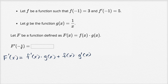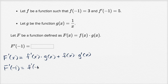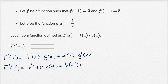And so if we want to evaluate this at negative one, capital F prime at negative one is equal to f prime of negative one times g of negative one, plus f of negative one times the derivative of g evaluated at negative one.